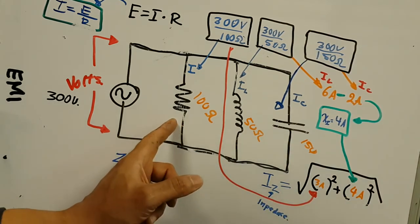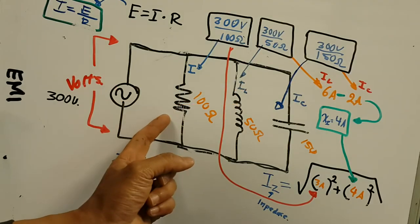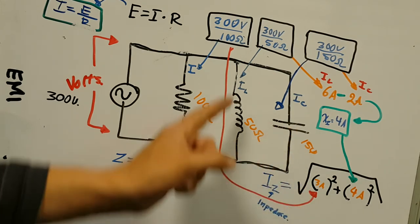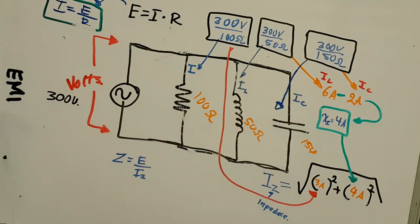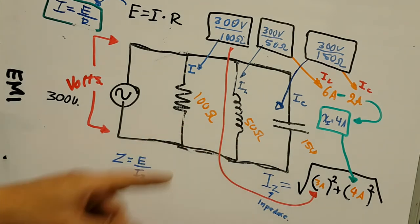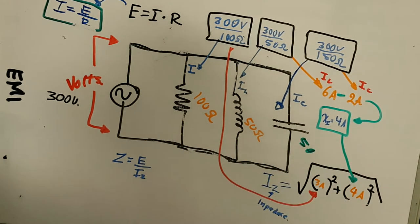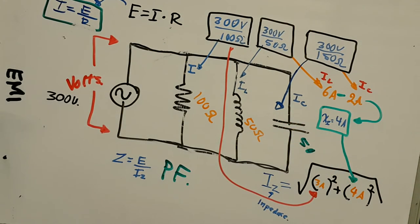The resistor uses some current, the inductor uses a lot of current, and the capacitor acts like temporary storage, compensating for what the inductor uses. If we wanted a perfect system with a power factor of one, we would need the inductive current and capacitive current to be equal — both at 6 amps — so they cancel each other completely.